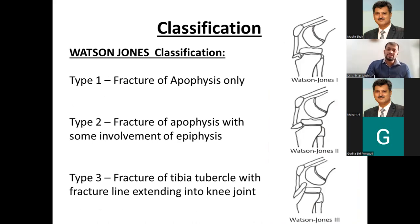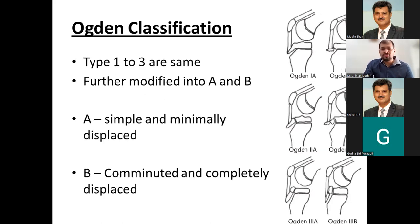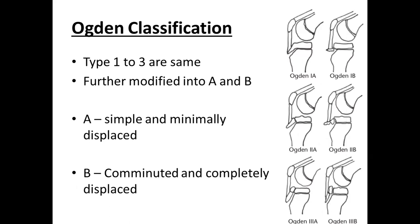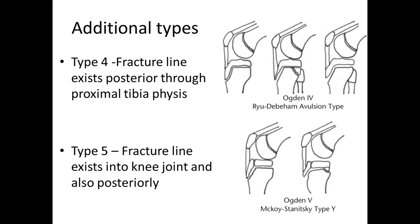Looking at the classification: Watson-Jones first classified this into three types. Type 1 was fracture of the apophysis only. Type 2 involved the apophysis with some involvement of the epiphysis but the fracture line not exiting into the joint. Type 3 was where the fracture line exited into the joint and was displaced. Ogden then modified this into A and B subtypes — A being simple and minimally displaced, B being comminuted with two or three fragments and complete displacement. Ogden Type 4 and 5 modifications described fracture lines going all the way through the tibial tuberosity into the epiphysis, exiting posteriorly into the metaphysis or through the physis.